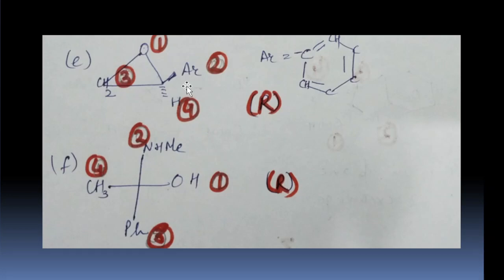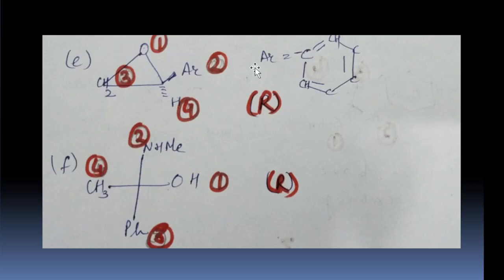Next example E. Here we have the chiral center with 4 substituents: oxygen, CH2, hydrogen, and AR (phenyl group). Oxygen gets priority 1. The phenyl group means C double bond C, so it gets 2nd priority, CH2 gets 3rd, and hydrogen gets 4th. Going 1, 2, 3 we get R, and the lowest priority is below the plane, so the configuration is R — confirmed correct.